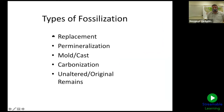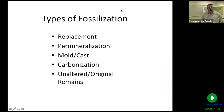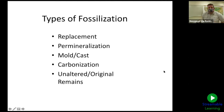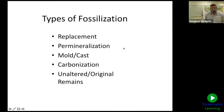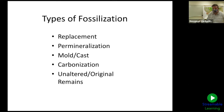Now we're going to talk about the types of fossilization. Remember, not all fossils are turned to stone. There are five main types: replacement, permineralization — I know these are big words but we'll go over all of them — mold and cast, carbonization, and then unaltered or original remains.